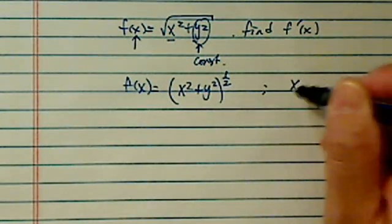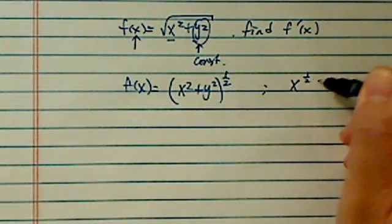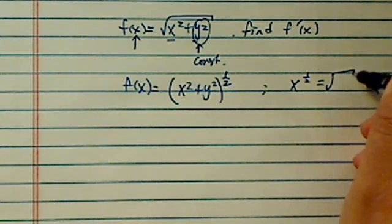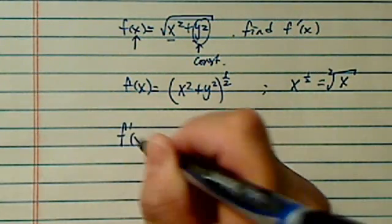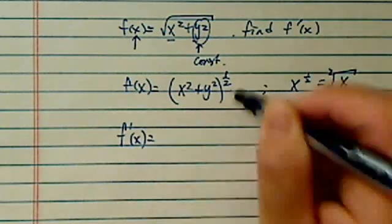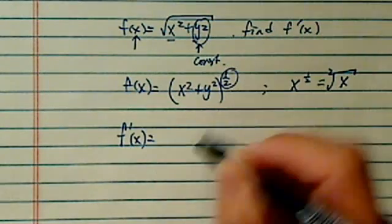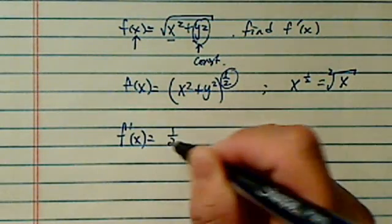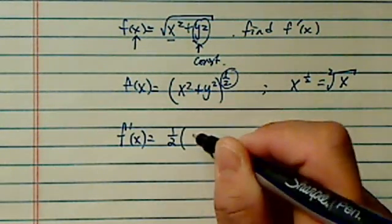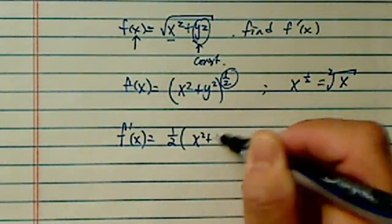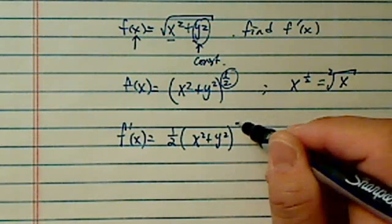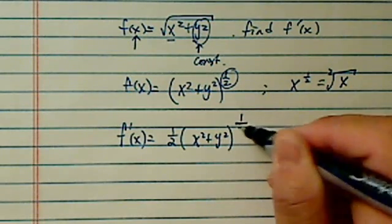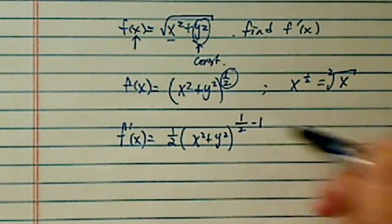Remember, by definition x to the half is equal to the square root of x. Finding this derivative, we're going to use the power rule. So the half comes off, giving us x squared plus y squared to the minus half, because the exponent is really half minus 1.